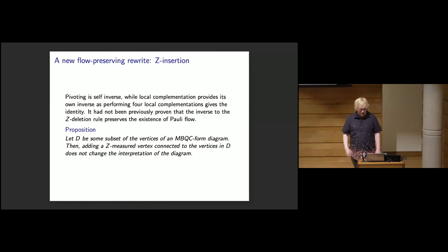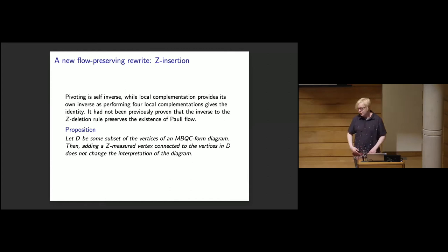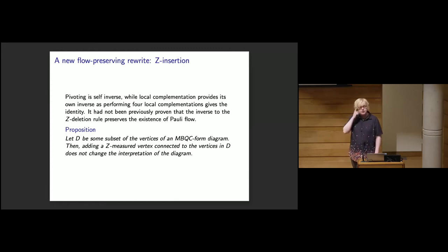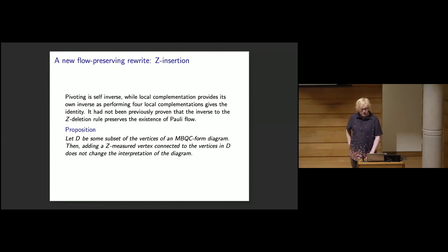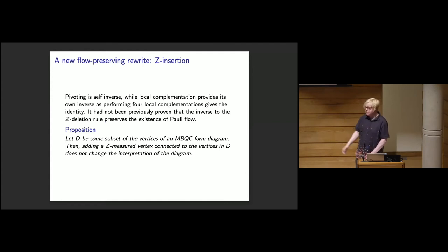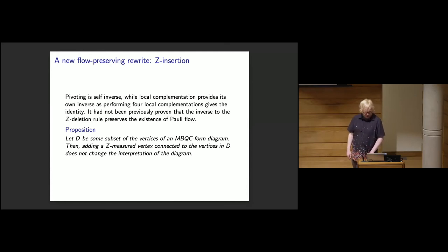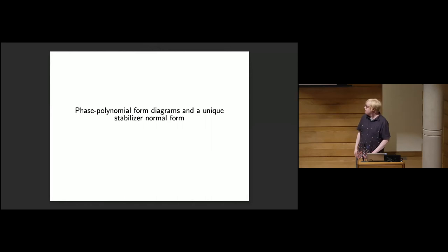Pivoting is self-inverse, and four local complementations give the identity, so three is the inverse of one. Previously, it was never proven that the inverse of the Z-deletion rule preserves Pauli flow. One of the first results in our paper is that given any subset D of the vertices, we can arbitrarily add Z-measured vertices connected to that subset without changing the interpretation of the diagram, and this preserves Pauli flow.